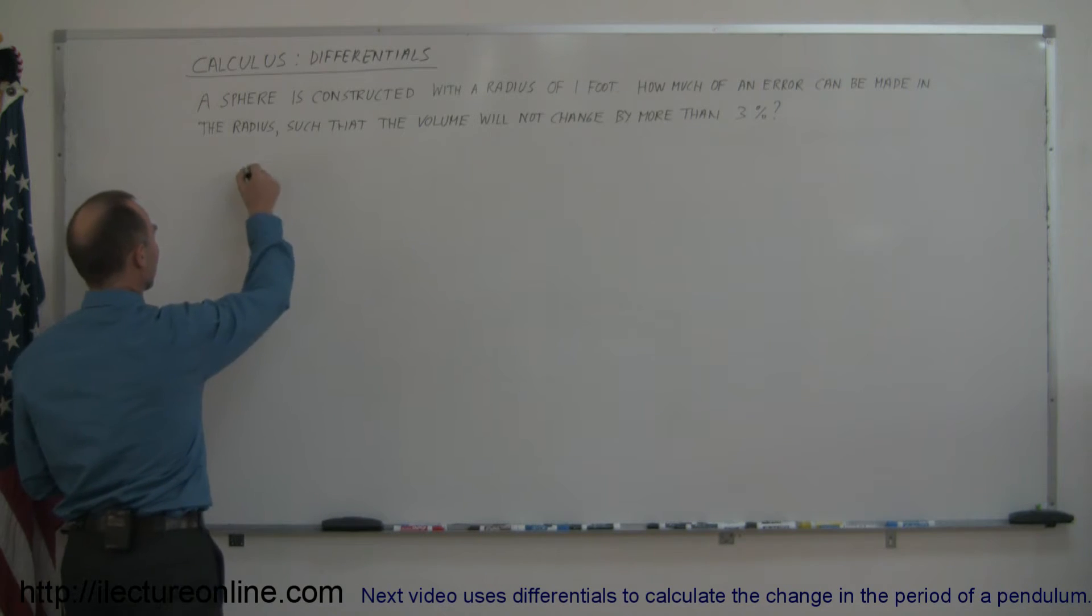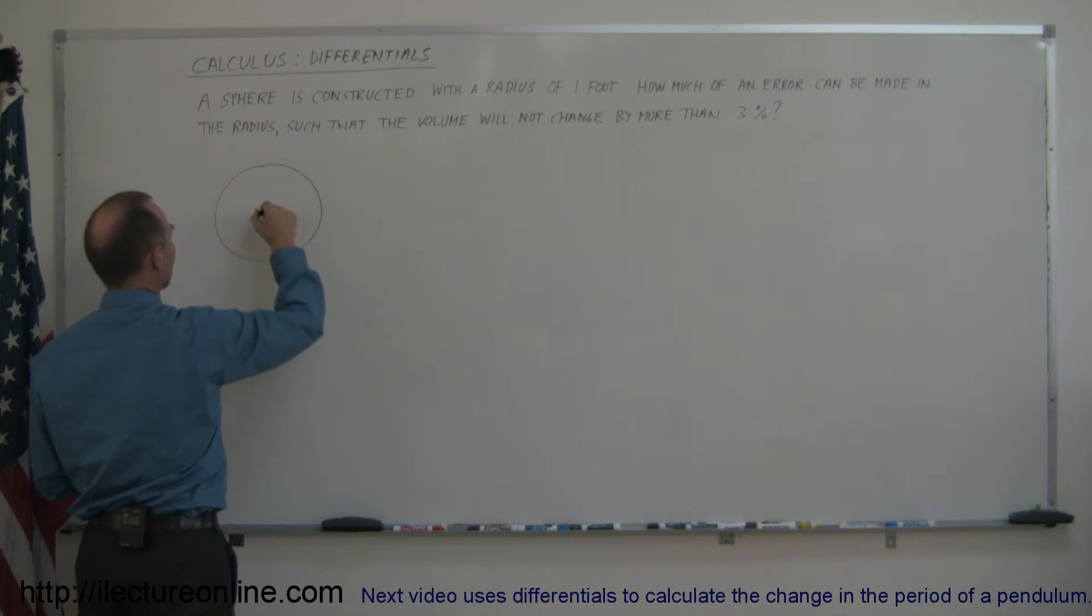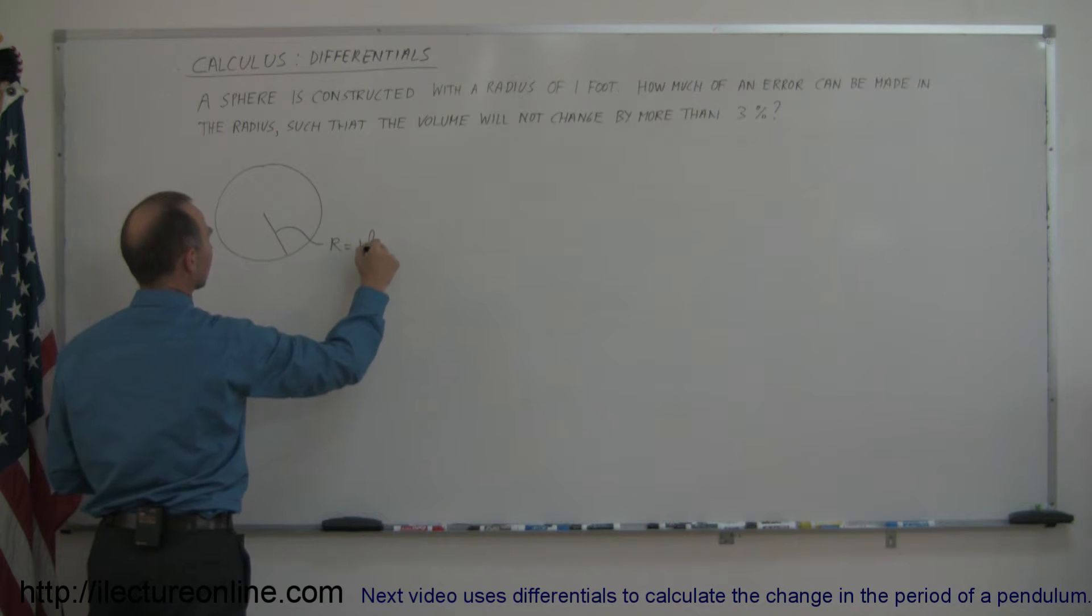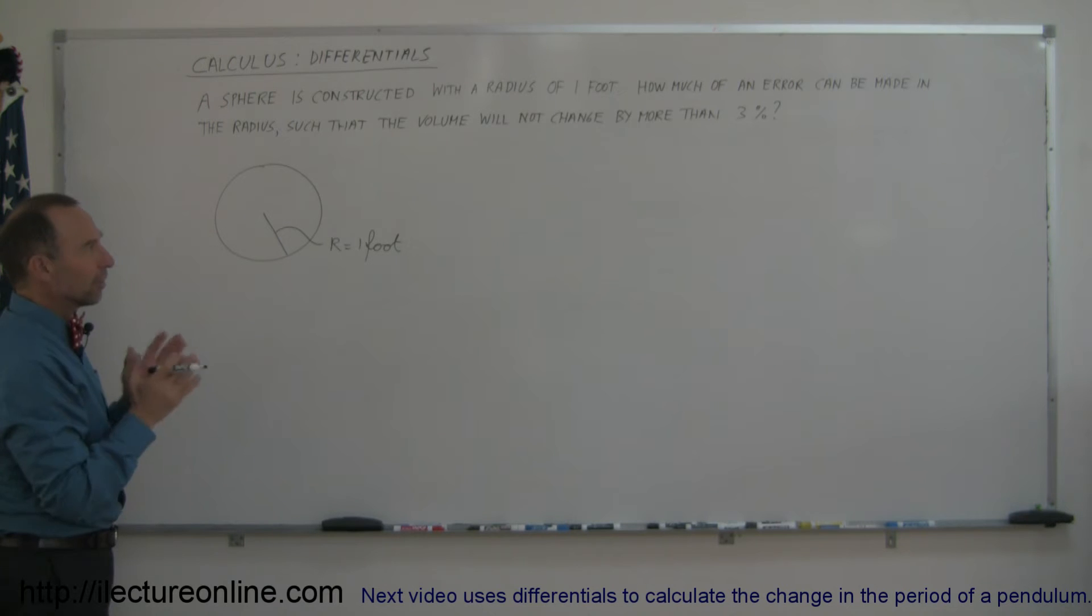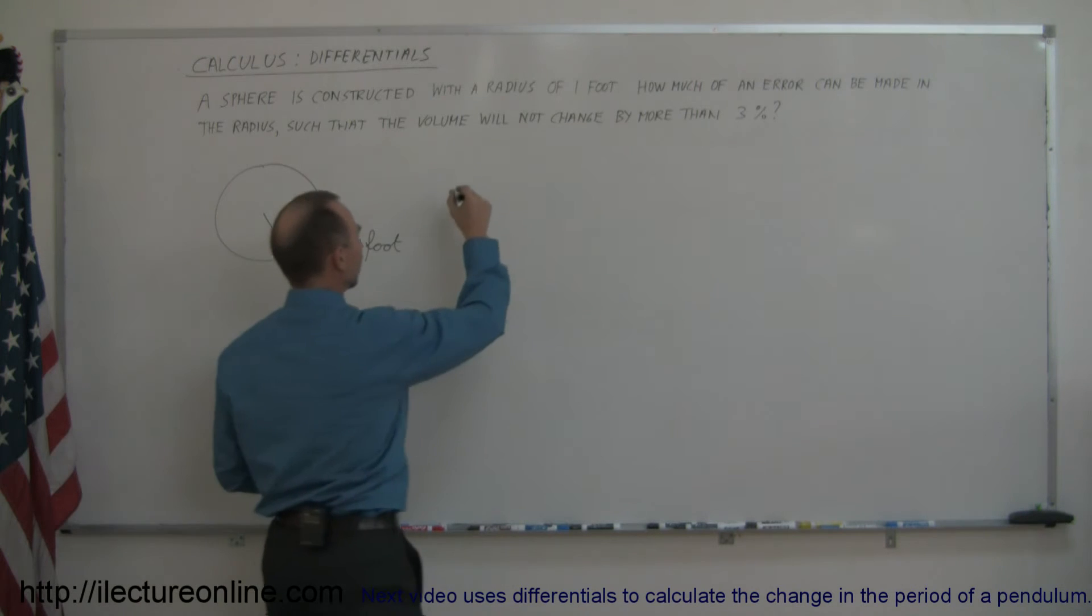So let's draw a little sphere right here. We realize that the radius is supposed to be one foot. But we're allowed to make a small error in the radius as long as the total volume doesn't change by more than 3%. So let's write an equation for the volume.